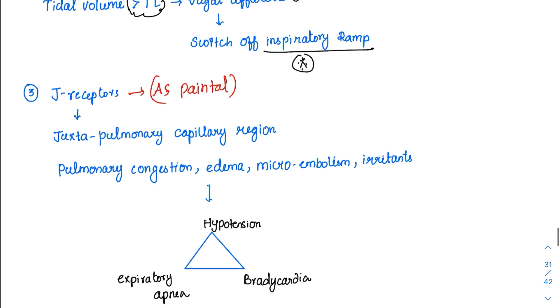Why it was named as J-receptors? Because it is in very close proximity to that of the pulmonary capillaries. It is juxta. Juxta means near. It was near to the pulmonary capillaries. That's why it is called as the J-receptors.